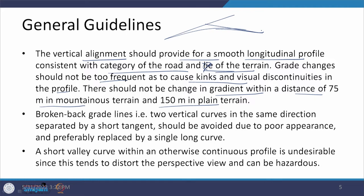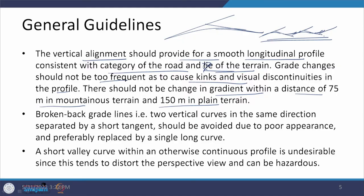The longitudinal profile should look quite smooth. If too many curves are provided one after another, they create a sort of distortion in the driver's perception when looking at that alignment. There is always a possibility of visual discontinuity, and the driver may become alarmed that the road is going to close or stop at a certain point. That is where it says there should not be a gradient change within 75 meters in mountainous terrain and 150 meters in plain terrain.